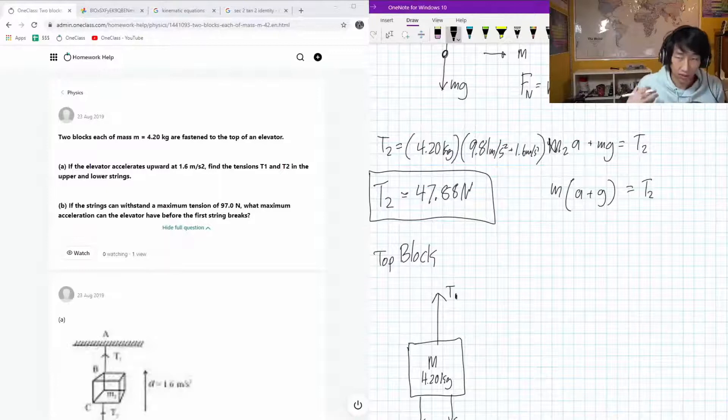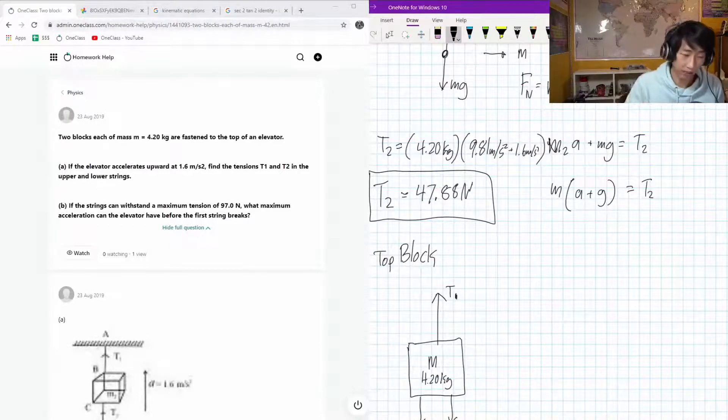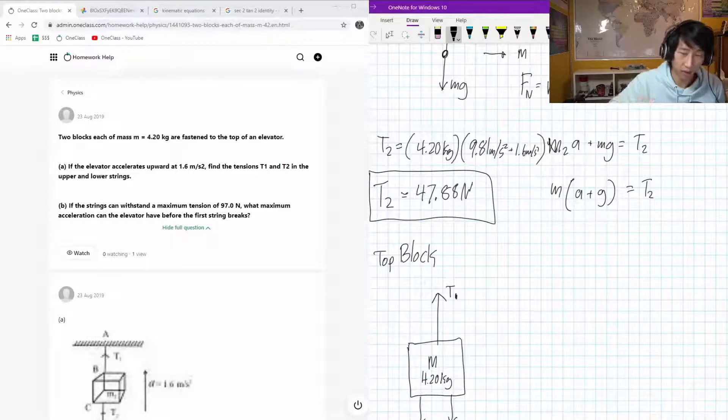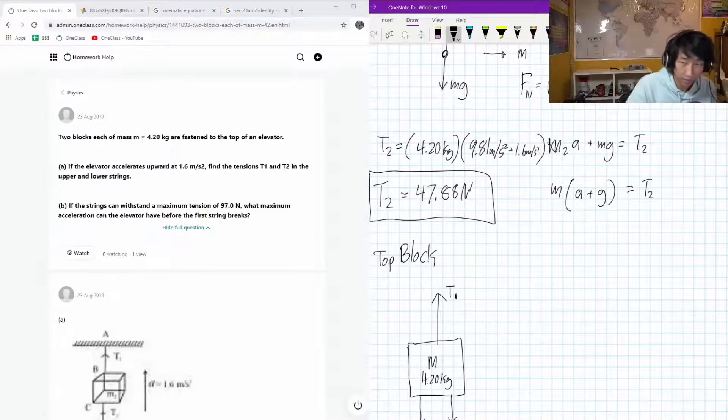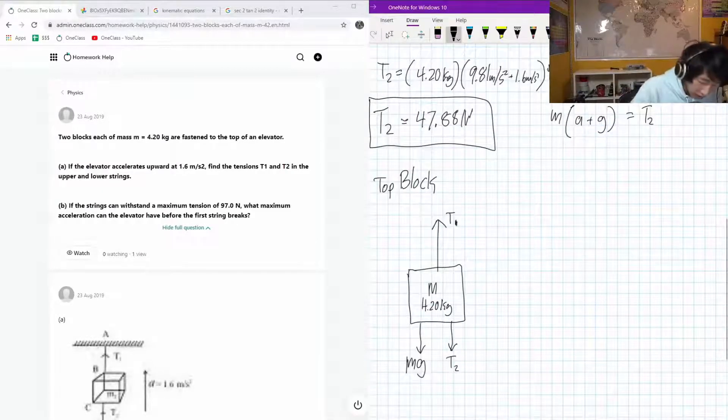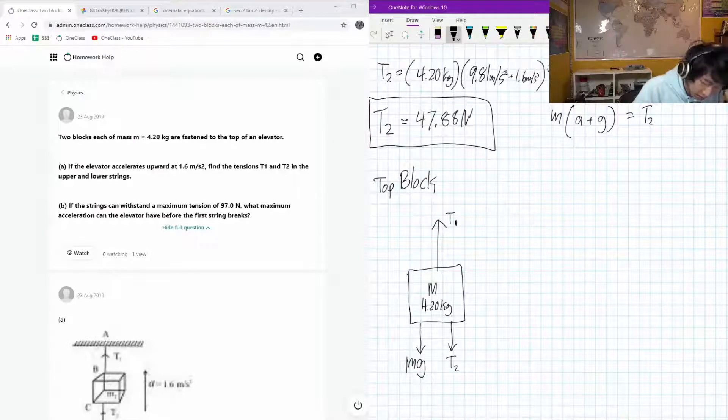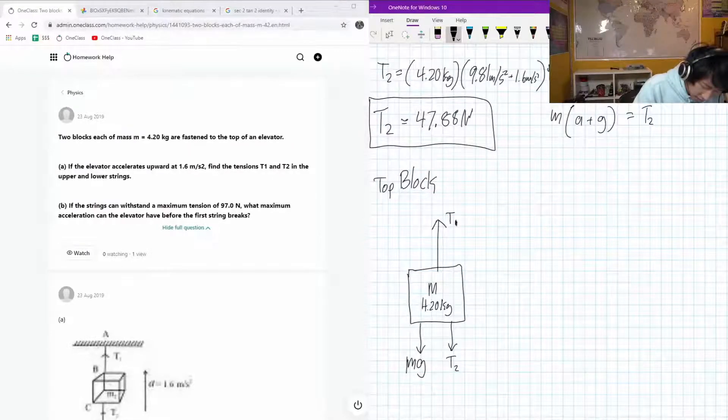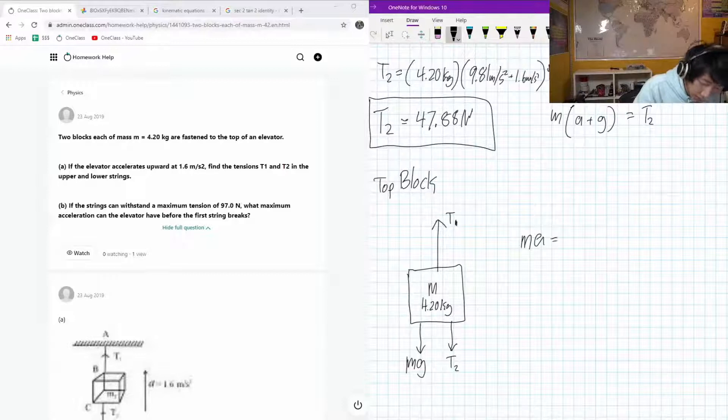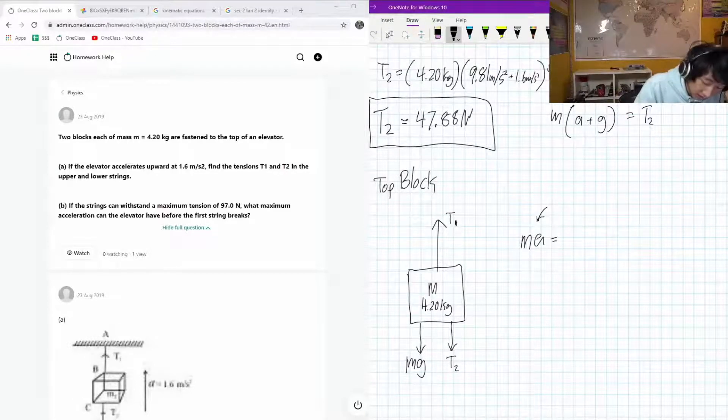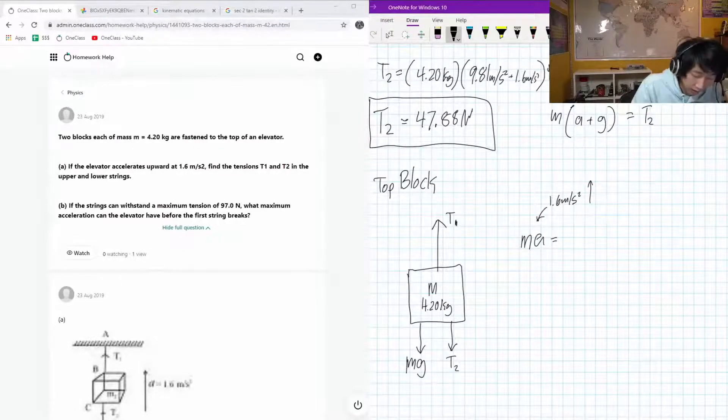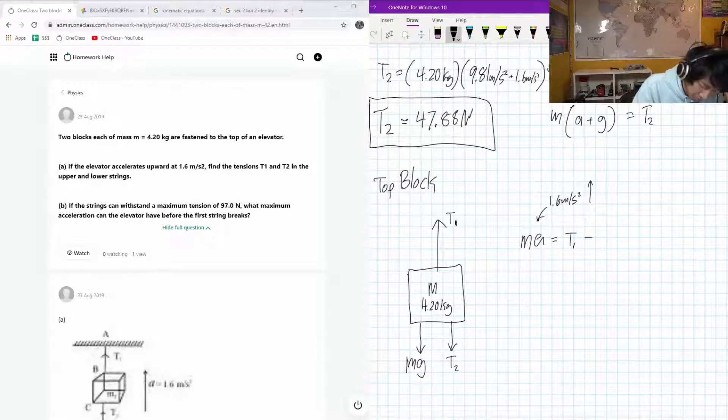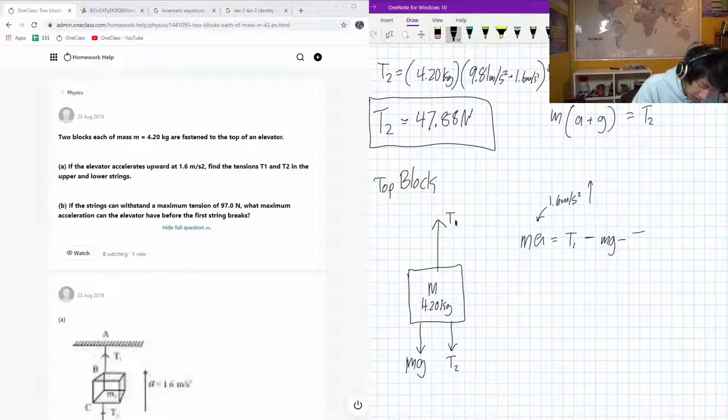So yeah, because the top block has to be providing that tension. Otherwise, the lower block is not going to go upwards if the top block is not supplying tension to it at all. So this explains the diagram here. Okay, so let's sub in our numbers. So with the same procedure, we know that our mass times acceleration is going to be equal to our tension 1 minus our weight force minus tension 2.